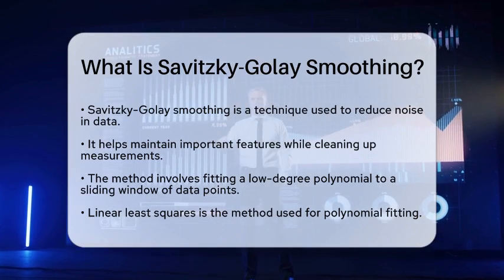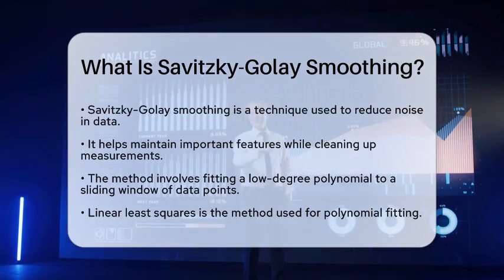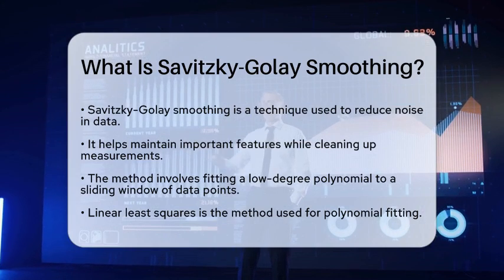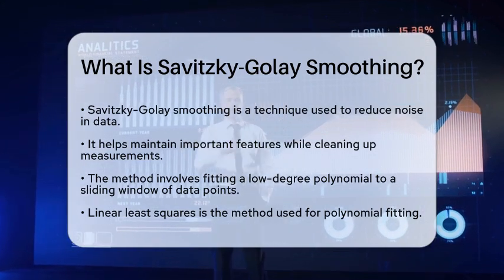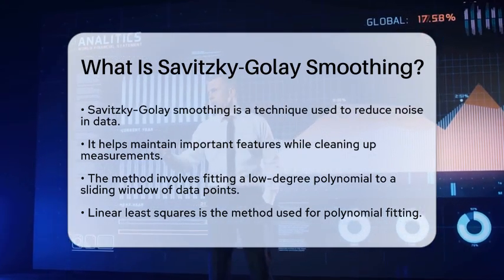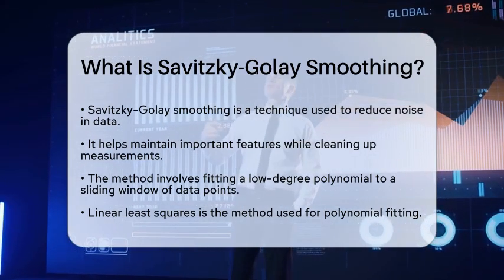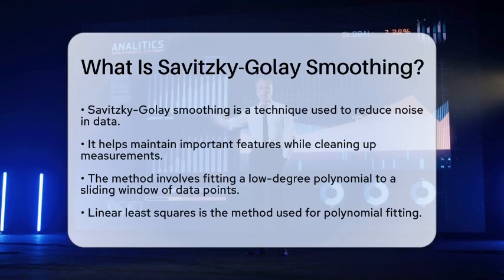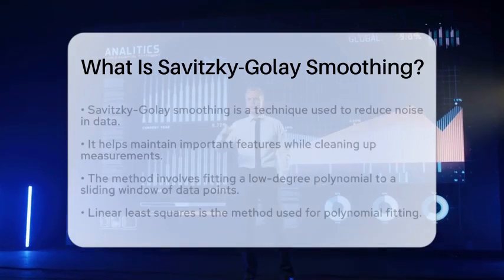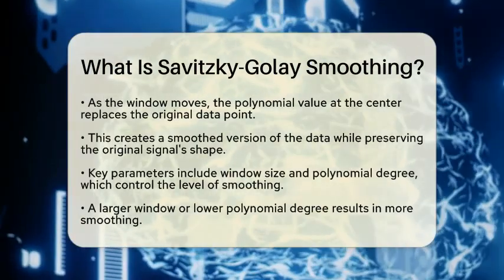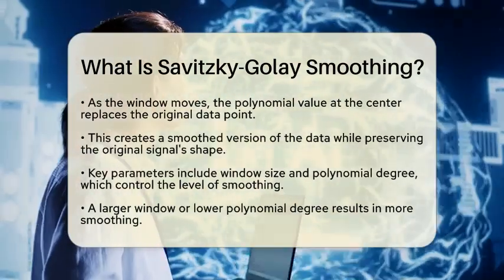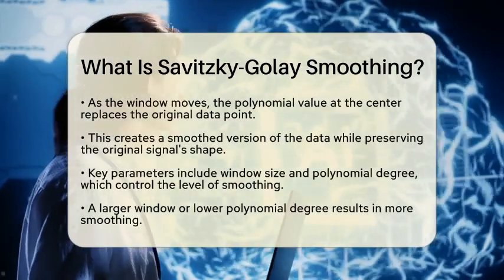The main idea is to take a sliding window of consecutive data points and fit a low-degree polynomial to these points. This is done using a method called linear least squares. As the window moves across the data set, the polynomial value at the center of the window replaces the original data point, creating a smoothed version of the data.